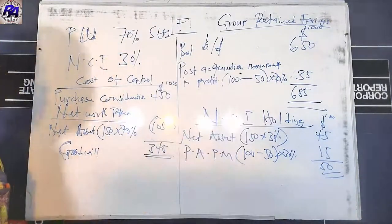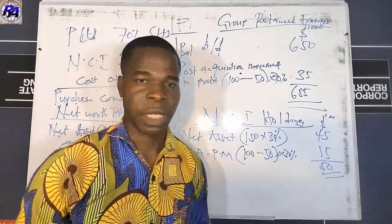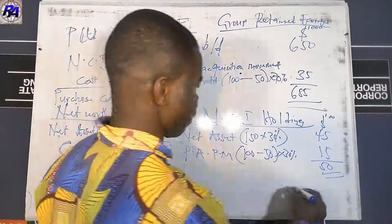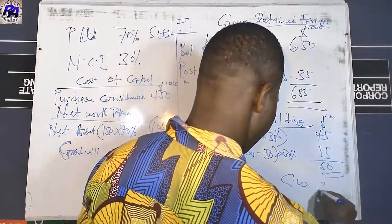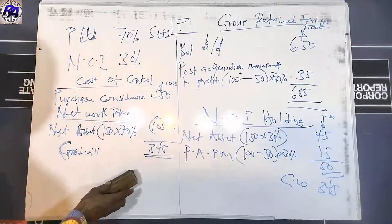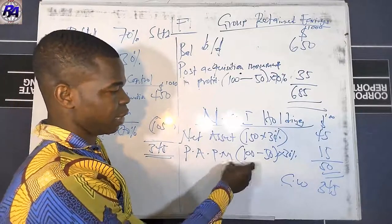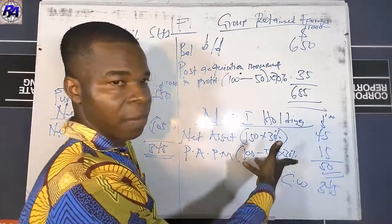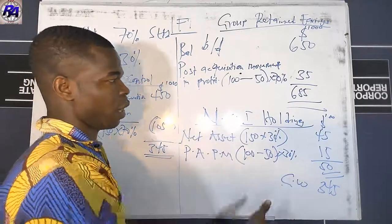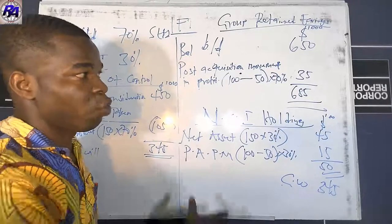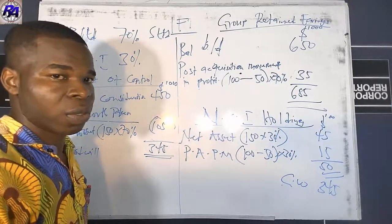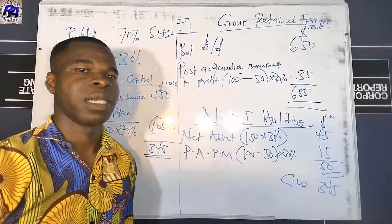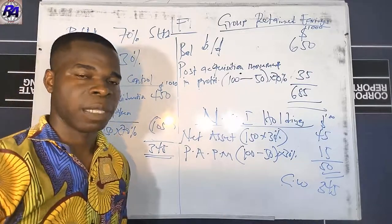Once you have determined all the values — goodwill, group retained earnings, and NCI holdings — you can proceed to prepare the consolidated financial statement. If NCI partakes in goodwill, the fair value and post-acquisition movement are included, and any goodwill impairment is shared accordingly.